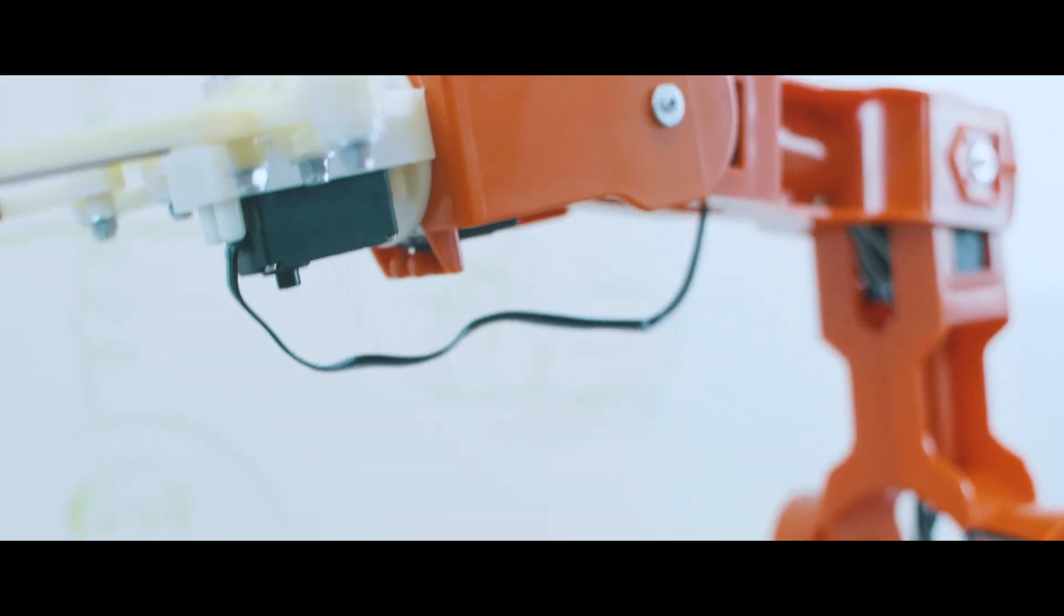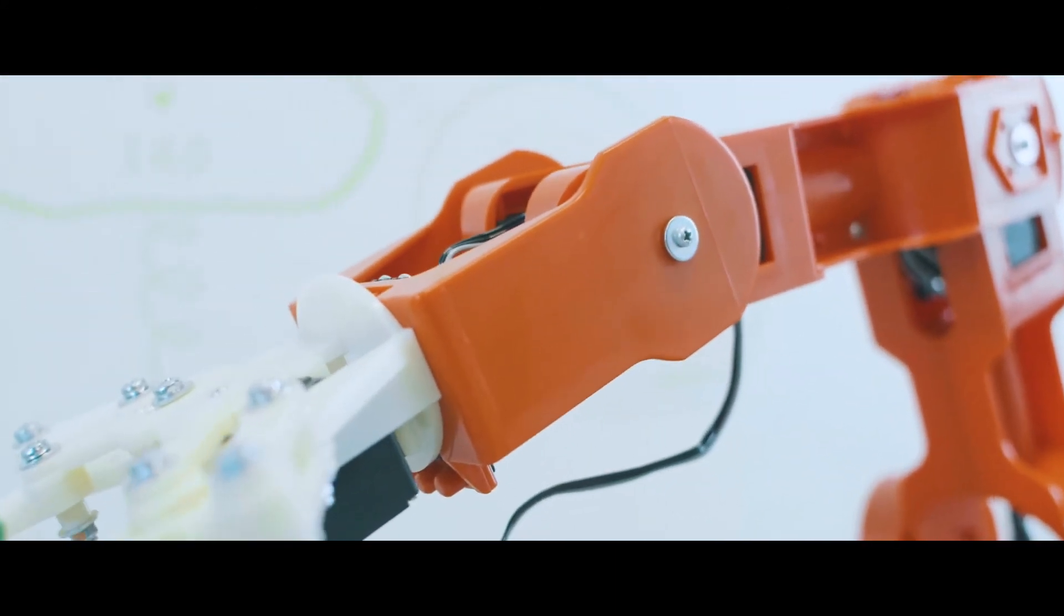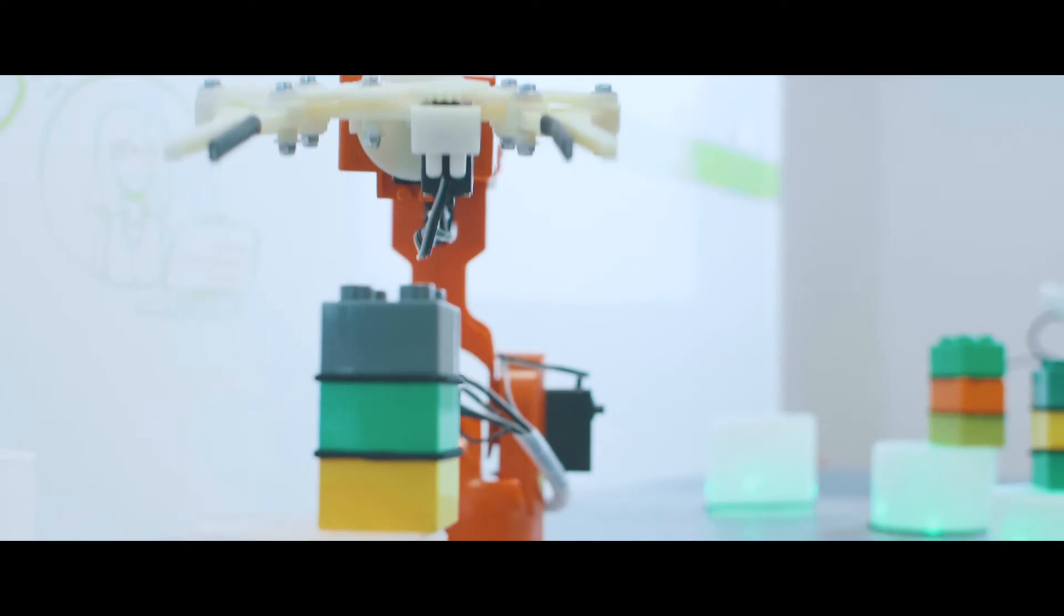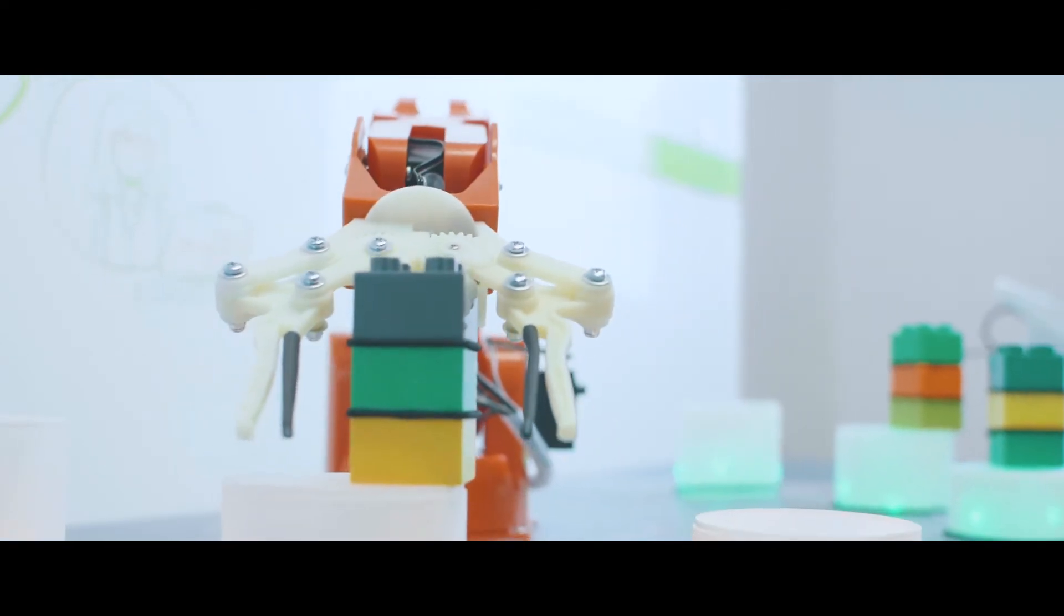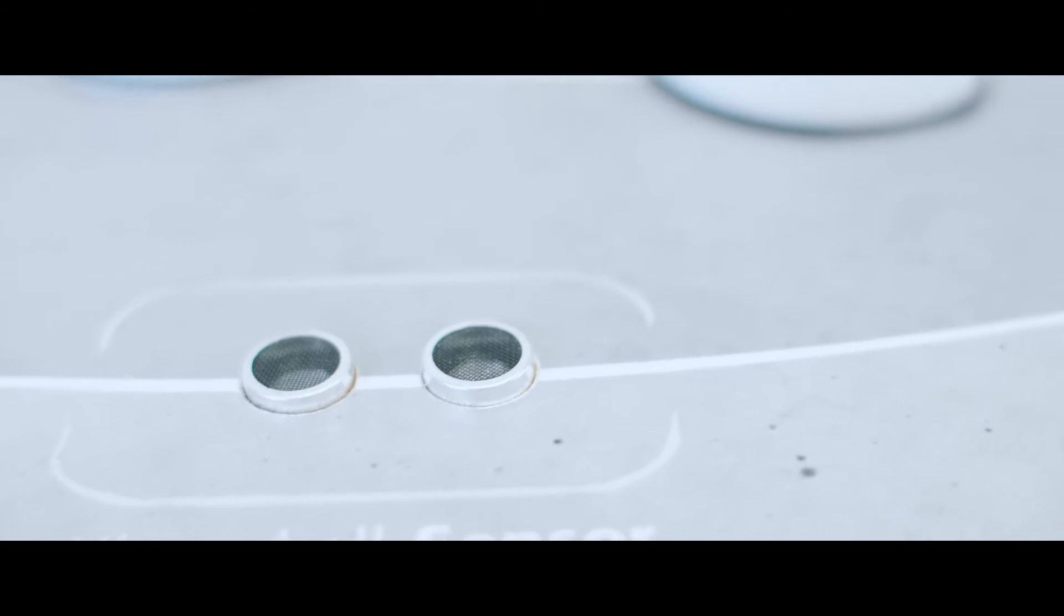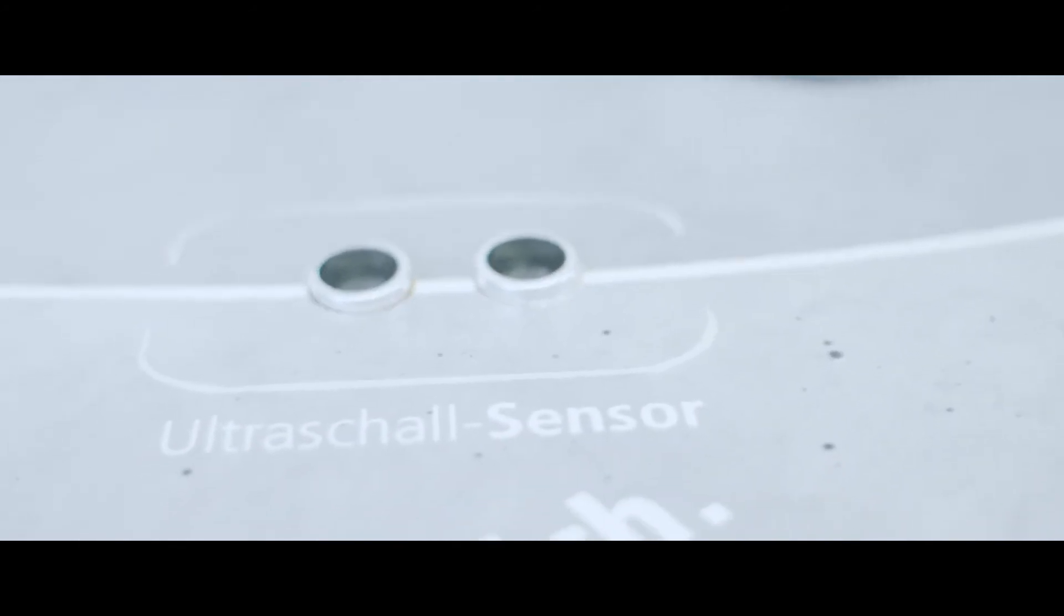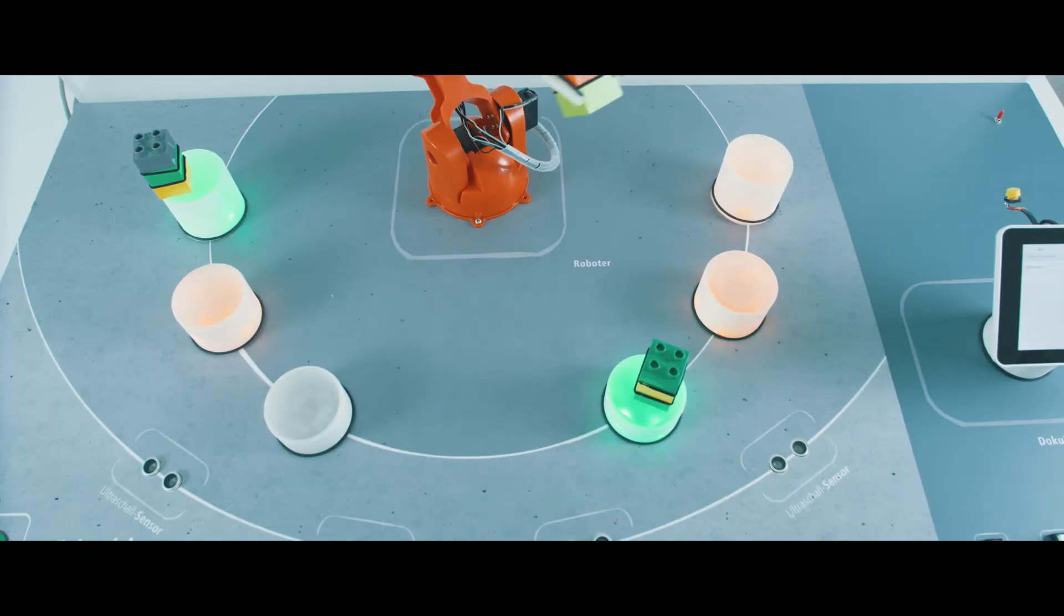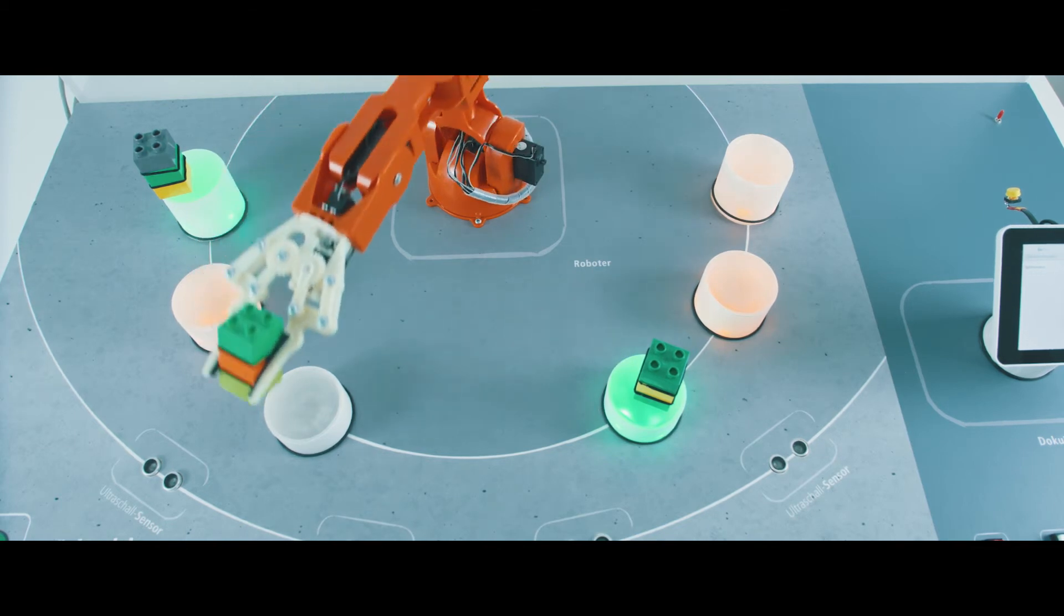The robot is controlled by a system that receives and processes sensor inputs. At the same time, the robot controls are connected to the software on the tablet and exchange information with it, for example error 0234.